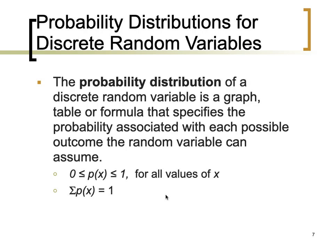There are two characteristics of a probability distribution for discrete random variables. First, the probability for each value of x must be within the range of 0 and 1 — we will not encounter probability values that are negative or greater than 1. Second, if we sum up all of the probability values, the sum must be equal to 1. Keep these two properties in mind when you are asked to construct a probability distribution for a discrete random variable.